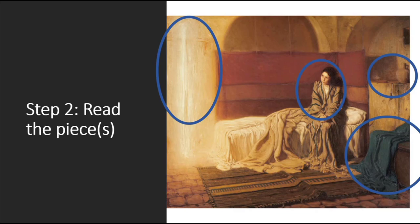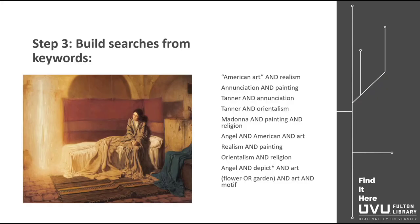From here I need to make some keywords and searches. My questions aren't keywords, but they may have keywords in them. You may do a broad search like "American art" and realism to get a few articles, and then narrower searches to get more granular results, like Tanner and Annunciation. Basic searches that work for almost all projects have the structure of keyword one AND keyword two, or possibly keyword one AND keyword two AND keyword three. It is good to have a mix of narrow searches and broad ones.